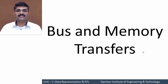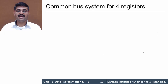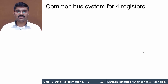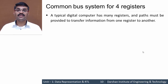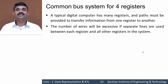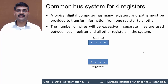Hello everyone. In this session we'll discuss bus and memory transfer. We had discussed registers in the previous session. In our computer there are many registers, so we need to connect each of the registers such that information transfer occurs between them. For that we require some common bus system. Say for example we have two registers, Register A and Register B, each of four bits, and we want to transfer data between these two registers.